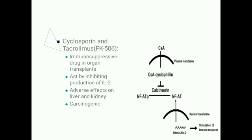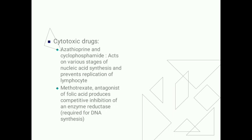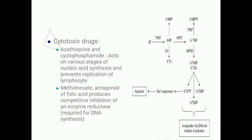Cytotoxic drugs such as azathioprine and cyclophosphamide are also used for immunosuppression. They act on various stages of nucleic acid synthesis and therefore prevent replication of lymphocytes. Azathioprine inhibits this replication.